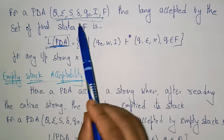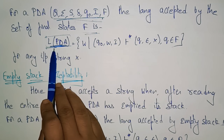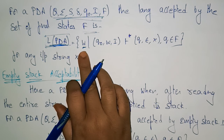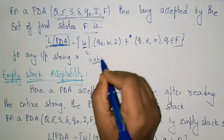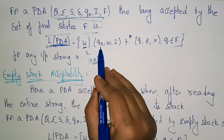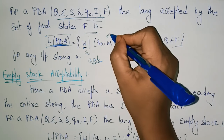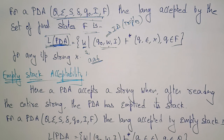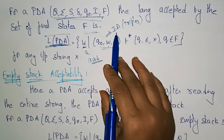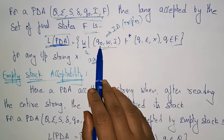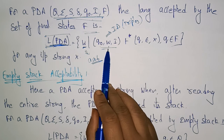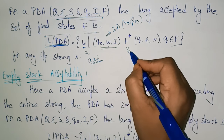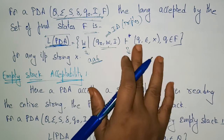The language accepted by the set of final states F can be represented as the set of strings W such that from Q-naught — the initial state — reading W, we use the ID (instantaneous description). The ID consists of triples: the state, the unconsumed input, and the top of the stack element. The turnstile notation connects two or more IDs together.